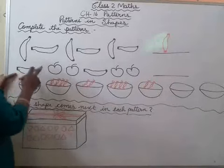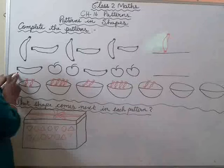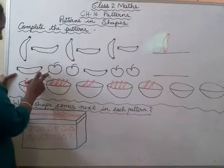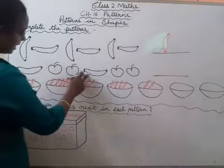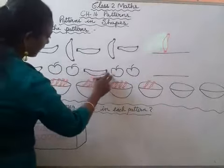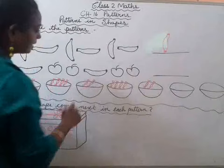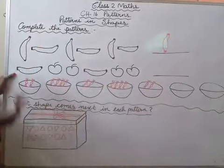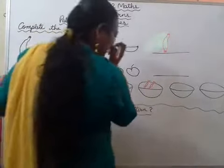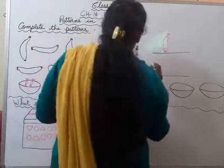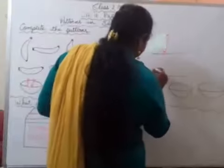Next, see these patterns. This is a banana, then apple, apple, banana, apple, apple. So what will be the next? Banana.